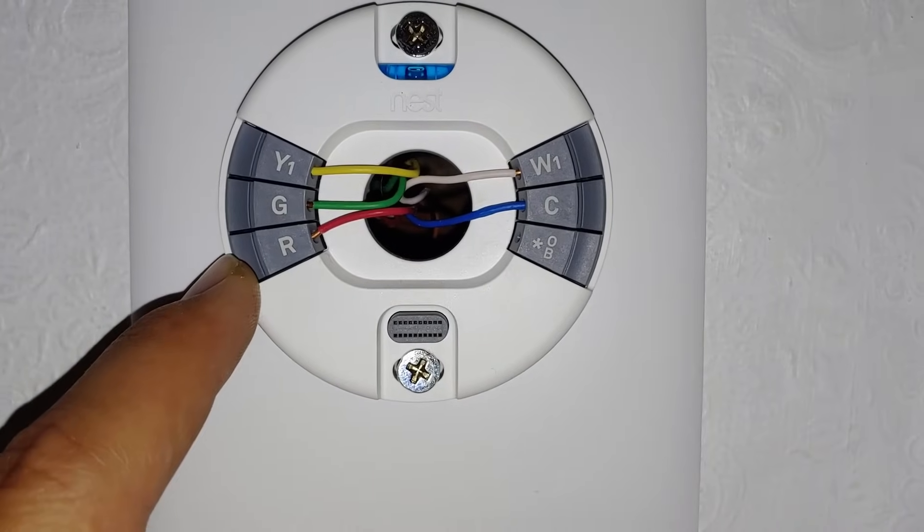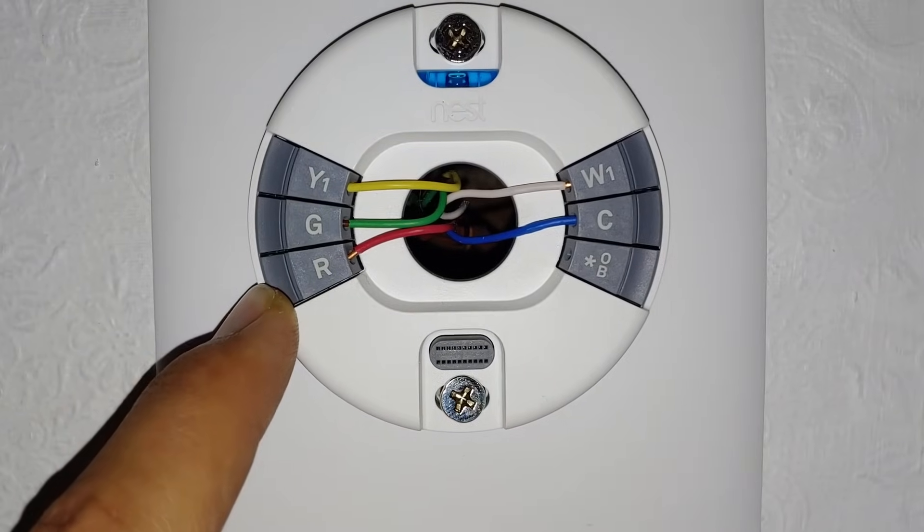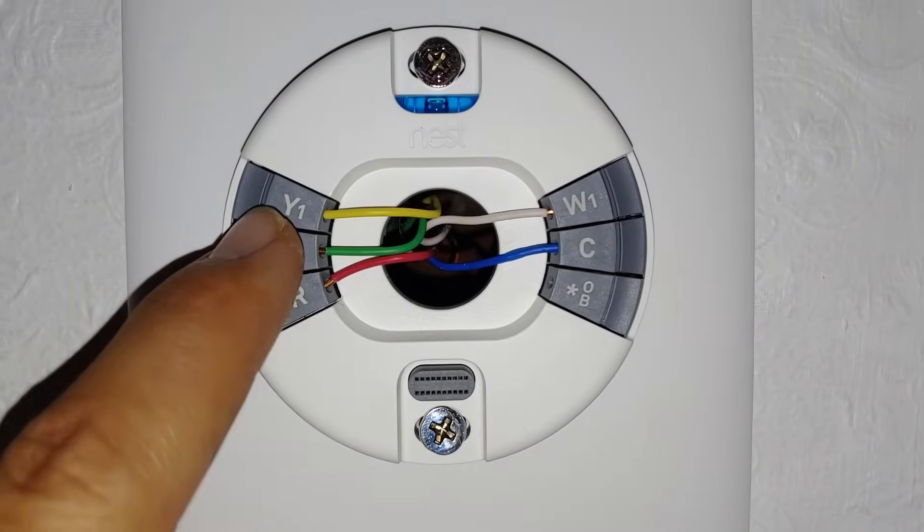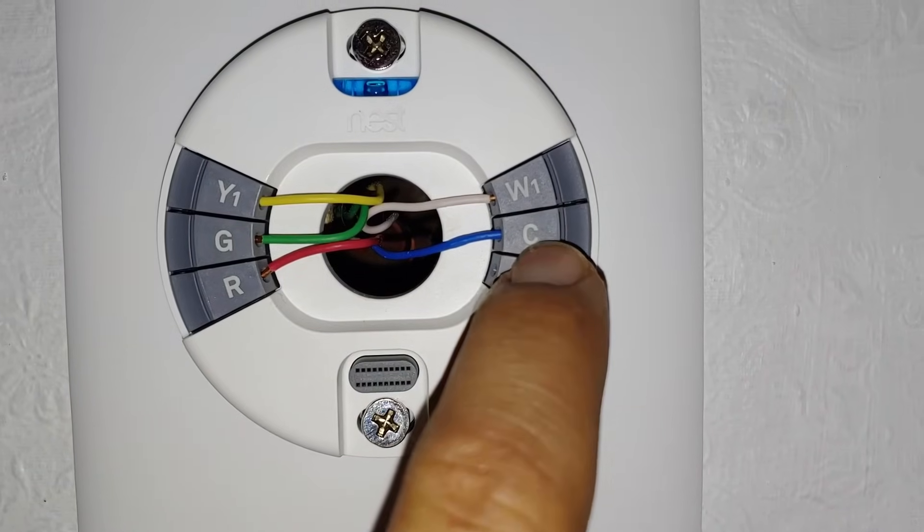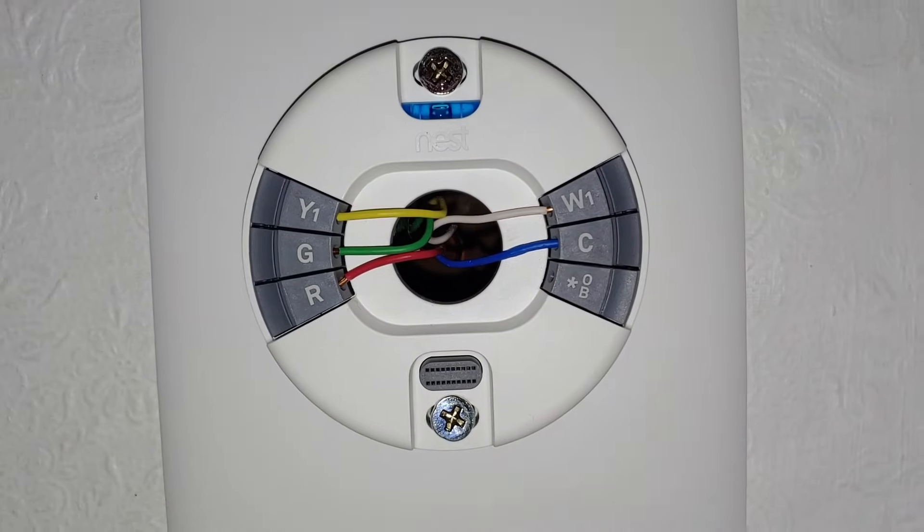Our wires are color-coded and this is typical but not guaranteed. R is red, G is green, Y is yellow, W is white, and common is typically blue but sometimes can be black.